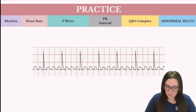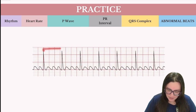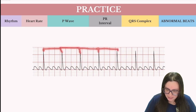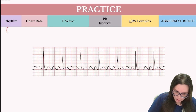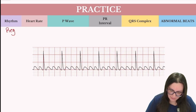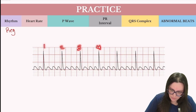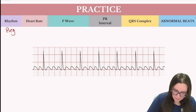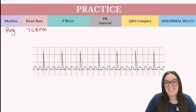Let's take a look at our next practice. Is the rhythm regular or irregular? If I march these out, they're going to fall in the exact same place every single time, so we can call this rhythm regular. When it comes to heart rate, counting out the QRS complexes: 1, 2, 3, 4, 5, 6, 7 — approximately 70 beats per minute.